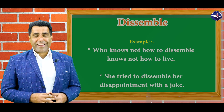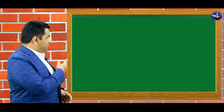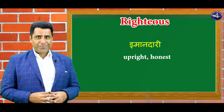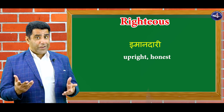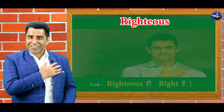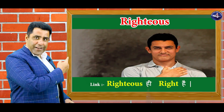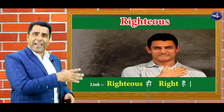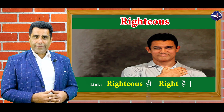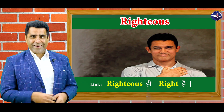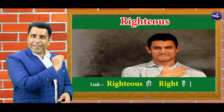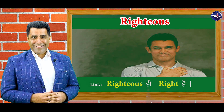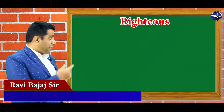So guys, our next word is righteous — imaandari, upright, honest. So the link word is 'right'. Righteous hi right hai — imaandari hamesha sahih hai. Righteous hi right hai. 'Right' is the main link word. Let's see the sentence.